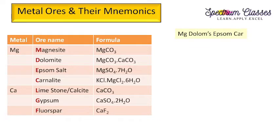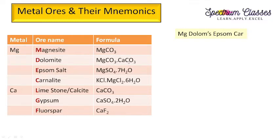The next metals are magnesium and calcium — the alkaline earth metals, found in the earth's crust. For magnesium, I use a sentence rhymed with the famous nursery rhyme Old MacDonald. The mnemonic goes: mag, dol, epsom, car — standing for magnesite, dolomite, Epsom salt, and carnallite.